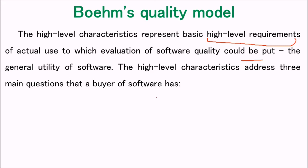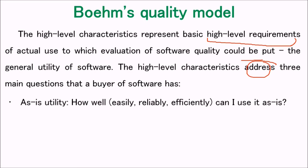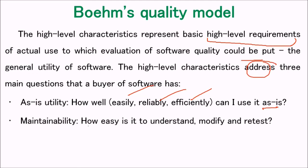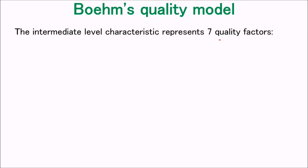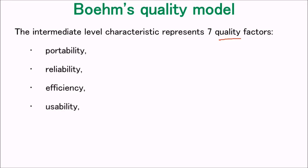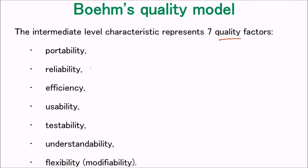The higher-level characteristics address three main questions a buyer of software has: How well can I use it as-is — easily, reliably, efficiently? Maintainability means how easy the software is to understand, modify, and retest. Portability asks: can I use it if I change my environment? The intermediate level represents seven quality factors: portability, reliability, efficiency, usability, testability, understandability, and modifiability (flexibility).